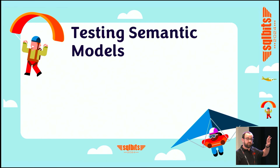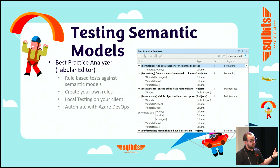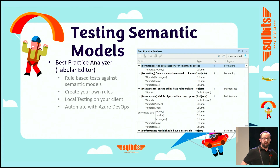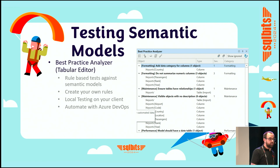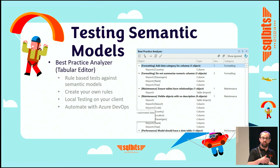Moving on — I talked around DataOps principles and the element of wanting to test and validate prior to deployment. I'm going to touch on using best practice analyzer within Tabular Editor. Tabular Editor 2 is free, and best practice analyzer is a feature within it. It allows you to run rules against your semantic models and Power BI datasets. You can create your own rules, test locally, and importantly, automate those tests within Azure DevOps. Microsoft does have a published list of rules you can apply, so you don't need to create a whole load yourself — you can take the default and recommended ones from Microsoft, and then as you develop, start to define some of your own rules as well.